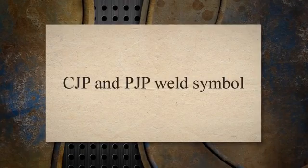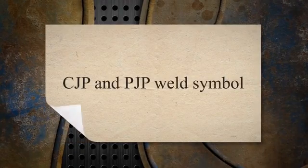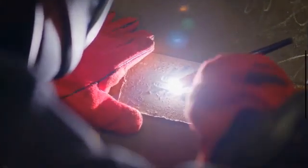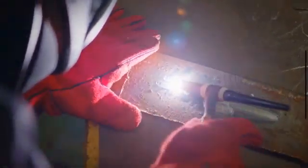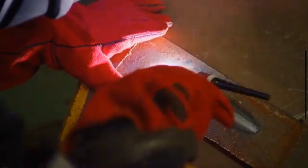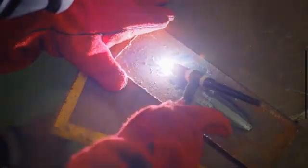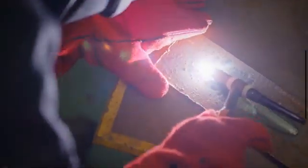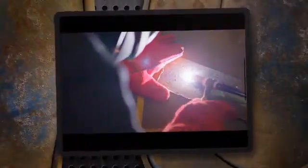For CJP and PJP weld symbols: a CJP weld joint must be clearly identified on the welding drawing as per AWS D1.1 or CSA W59. The tail part of the welding symbol shall mention the joint type as CJP, as shown in the welding symbol example.